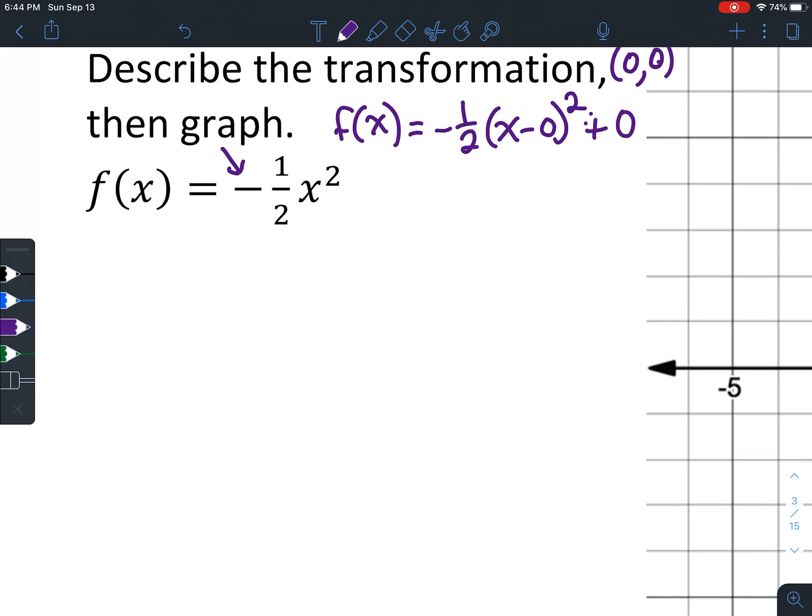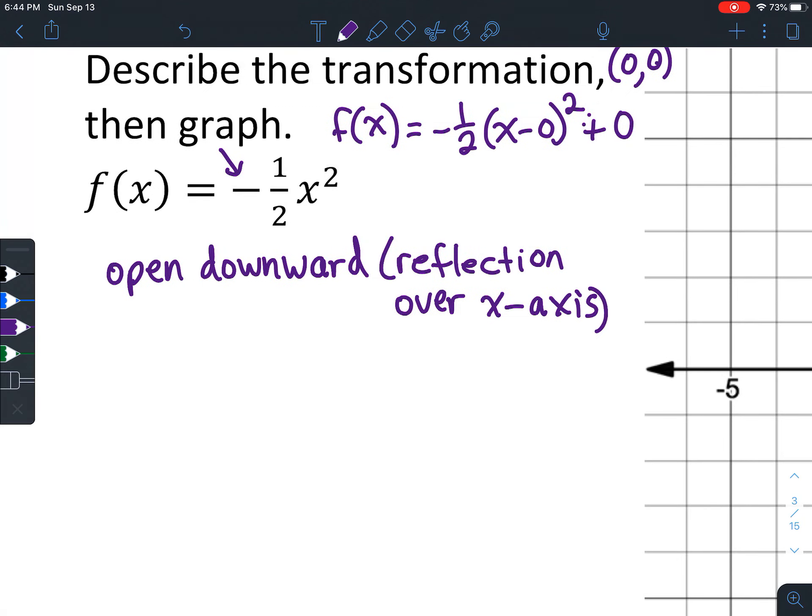So another way you could write this is f(x) = -½(x - 0)² + 0. So you can see that our vertex is (0, 0). That's an equivalent statement, it's just that this is a simplified version right here. So it doesn't have to translate at all, we're just going to make it thinner or wider. Now as soon as you see the negative, then you know that it's a reflection, which means it's going to flip over and be opening downward. So it's a reflection over the x-axis.